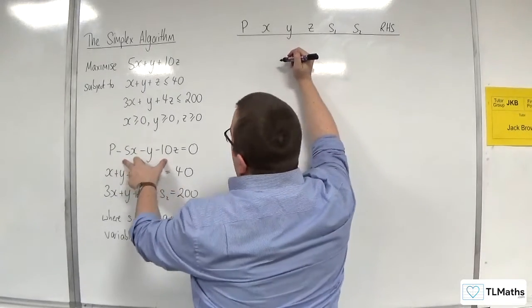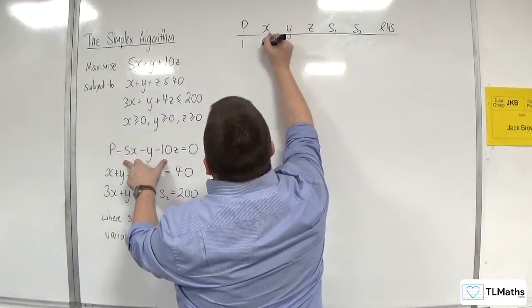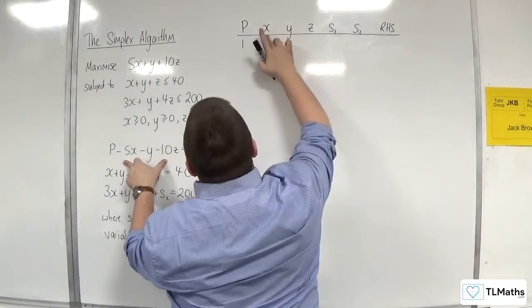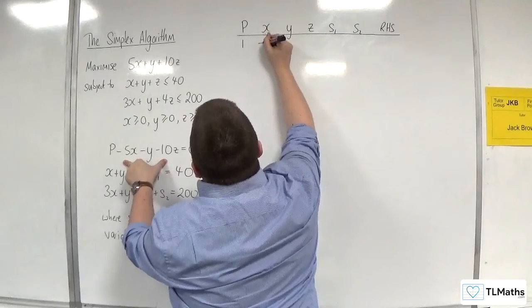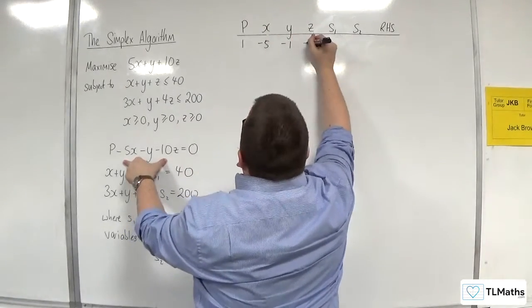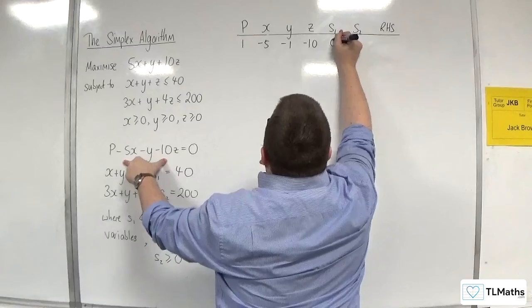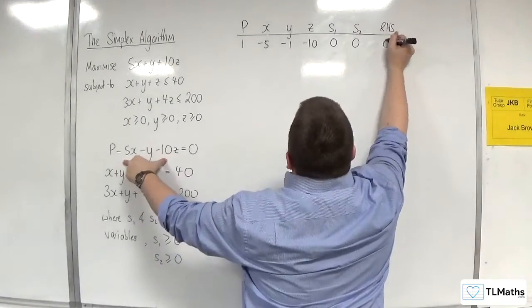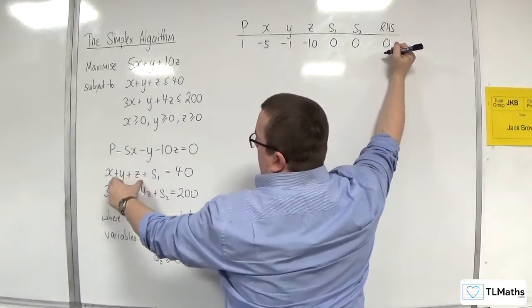Okay, so we're going to have this line first. So 1, minus 5, minus 1, minus 10, and these are 0. And the right-hand side is 0 as well. Then we've got this line.